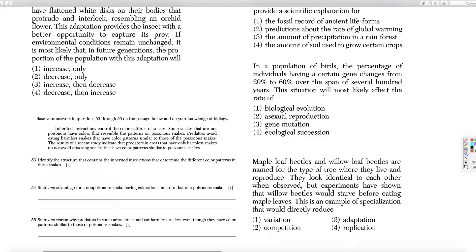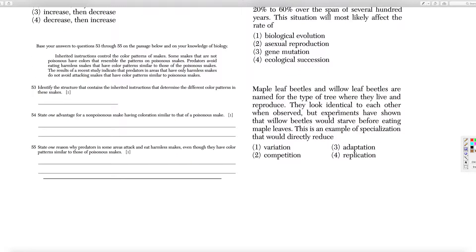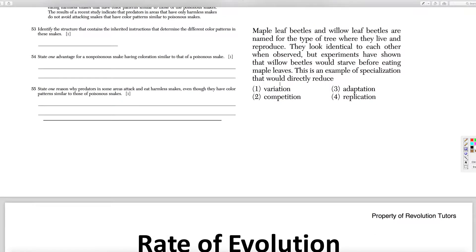20 to 60% will most likely affect the rate of evolution. Maple leaf beetles are named for the type of tree they live in. They look identical to each other when observed, but they all starve. So we said that reduces competition.